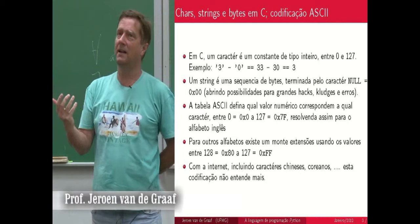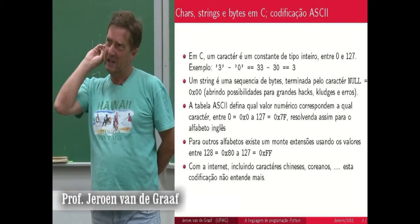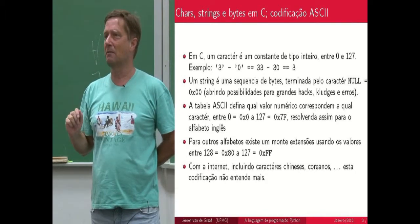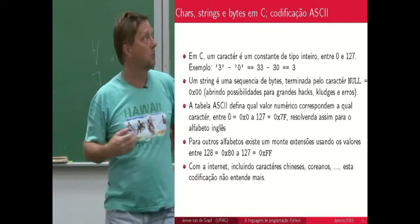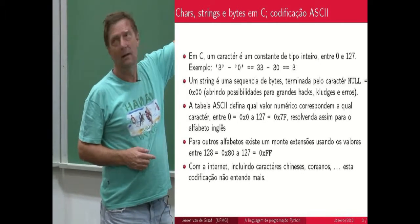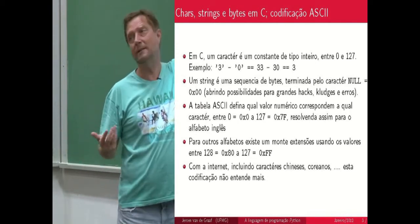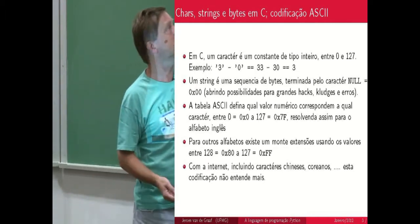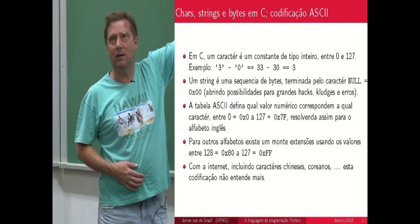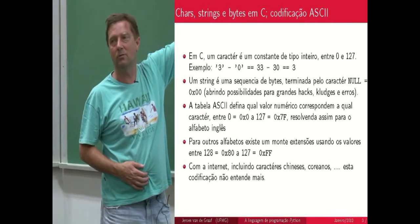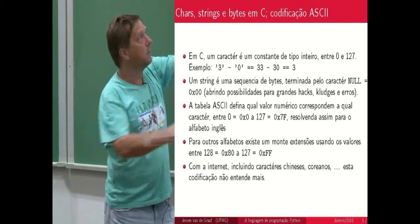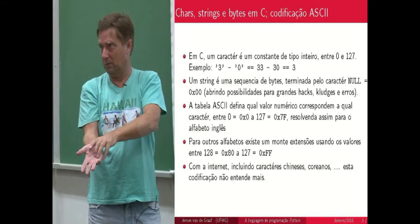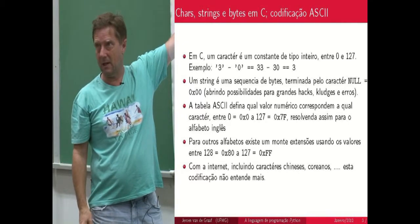Em C, na verdade, o carácter é uma constante que representa um valor inteiro. É uma coisa estranha. Eu levei anos até entender o que estava acontecendo. O carácter '3' é igual ao valor 33 em C, e o carácter '0' é igual ao valor 30. Você pode usar esta operação para determinar qual seria o valor numérico do '3', porque a diferença aqui é 3. Então, se você quer converter um carácter numérico, um dígito, para um valor numérico, você pode fazer isso em C — é completamente permitido.